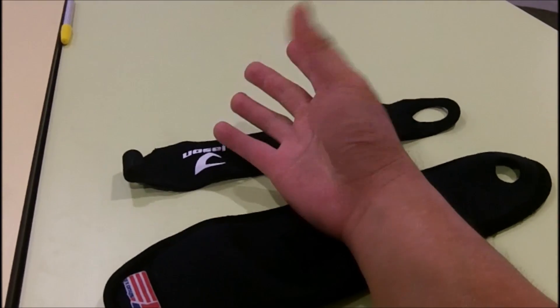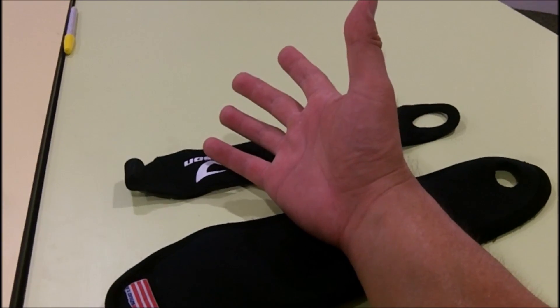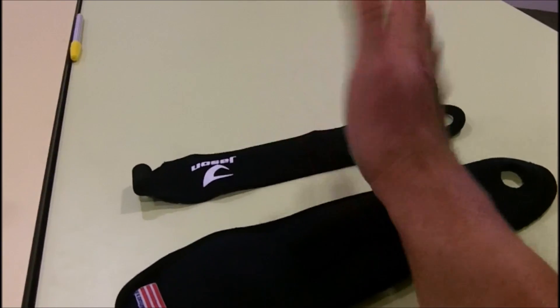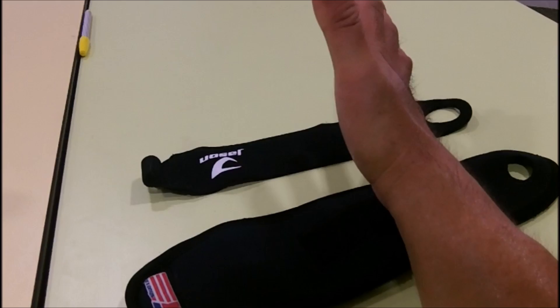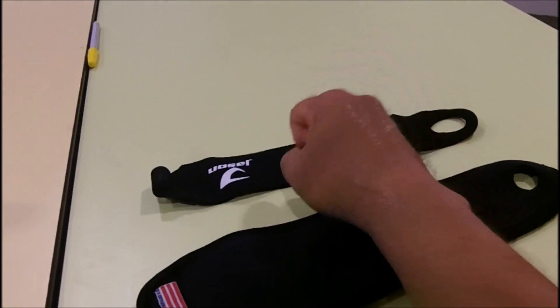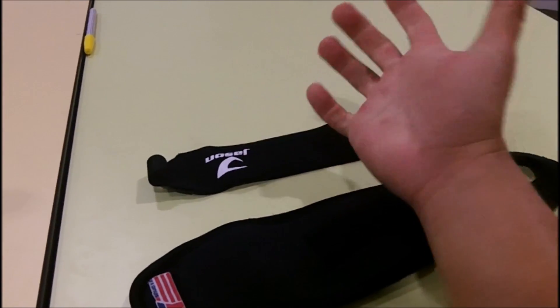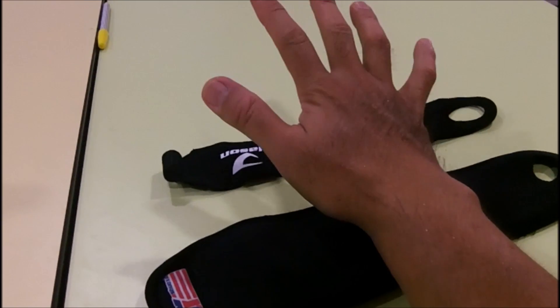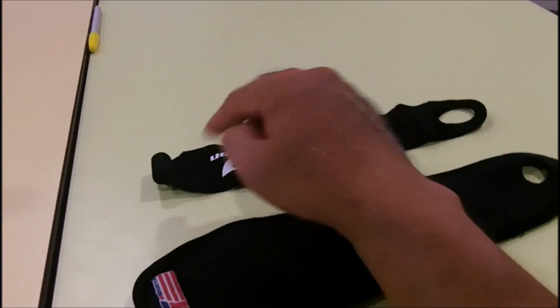Having a brace that isolates this thumb takes away some of the pressure. Because what happens is the brace forces my thumb back. And so I force it in, but it doesn't allow me to go too far over. And that really helps my wrist. So see if that helps you.